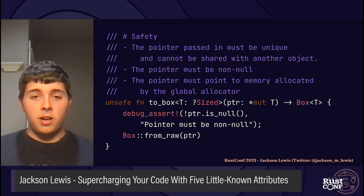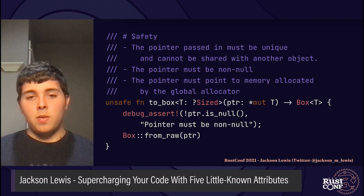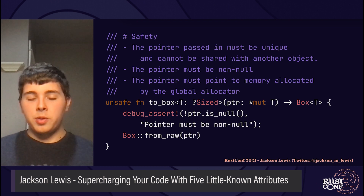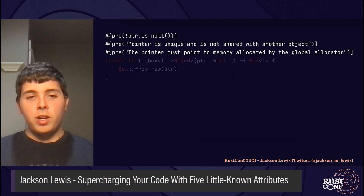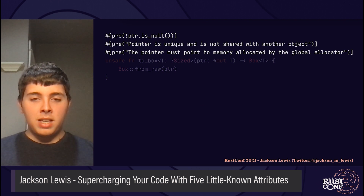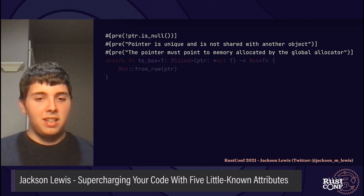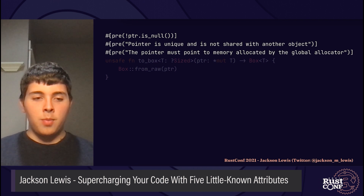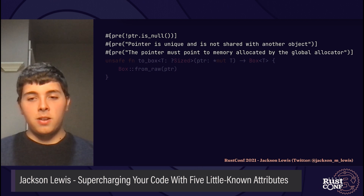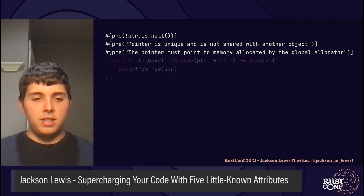What can we do to fix this? We could start by expanding the safety section and putting a debug assertion to check if the pointer is null. But still, proving that the function is safe is dependent on the function itself and not on its caller. Wouldn't it be better if the caller was responsible for proving that they're using the function safely? This is where pre comes in. Pre, which is short for precondition, is a very underutilized third-party macro crate that requires assertions to be placed at both the function definition and the call site. We need to add the preconditions to the function definition: the pointer must not be null, the pointer must be unique and not shared with another object, and the pointer must point to memory allocated by the global allocator.